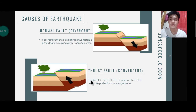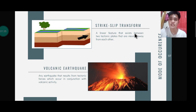Next is the thrust fault, or the convergent — a break in the earth across which older rocks are pushed above younger rocks. As you can see, the hanging wall moves in an upward direction.